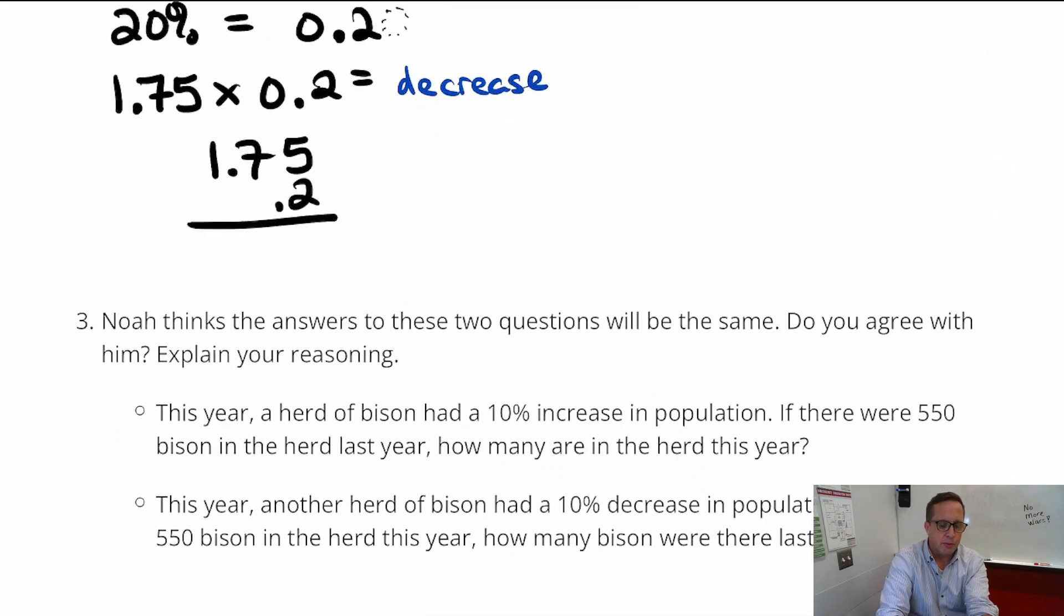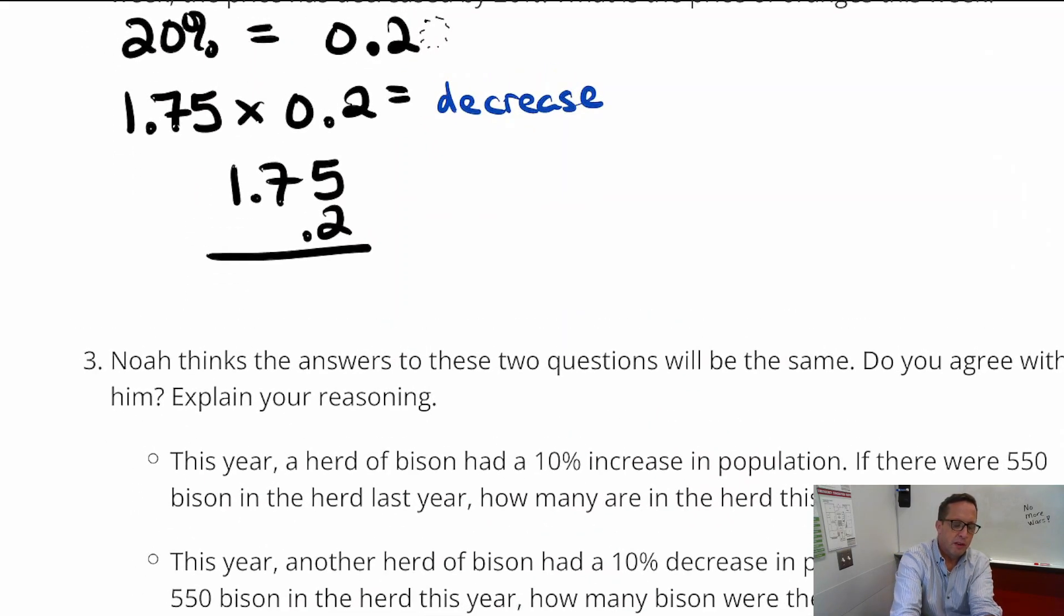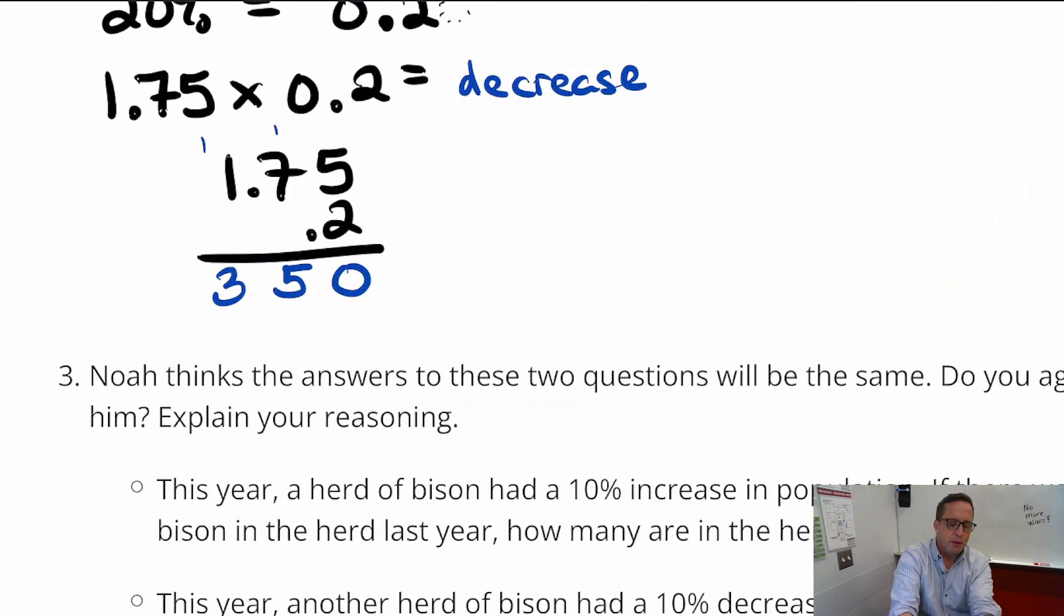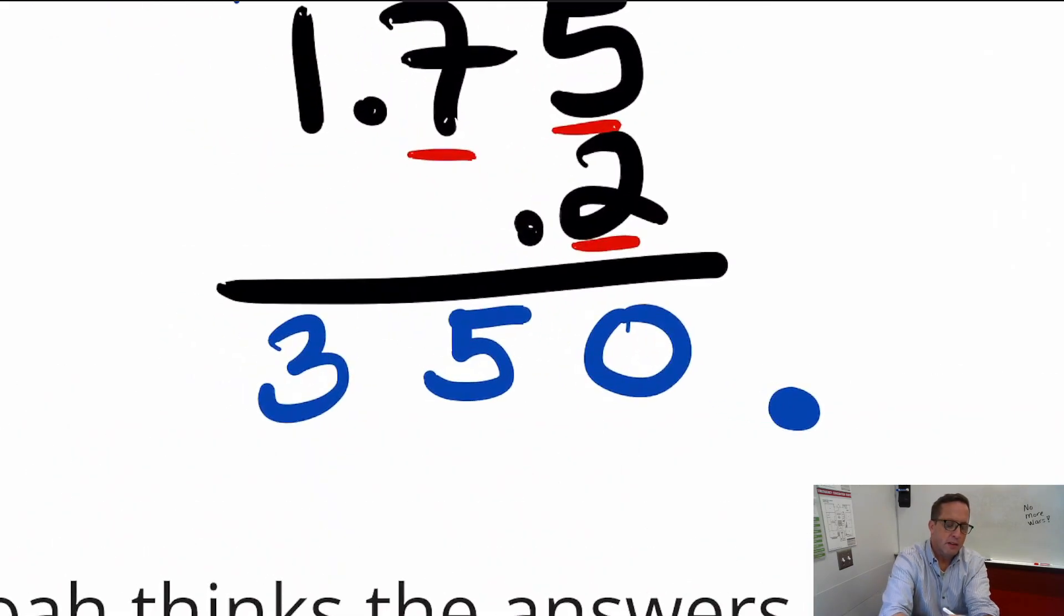Let's do $1.75 times 0.2. So remember, you don't need to line up decimals when you multiply them. So that's going to be 10, carry the 1, 14 plus 1 is 15, carry the 1, 2 plus 1 is 3. So $350. No, that's not it. We're going to need to move the decimal over, remember your decimal stuff. 1, 2, 3 places. So we're going to move it over 3 places there.